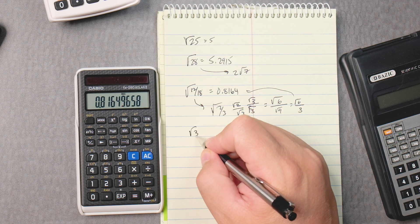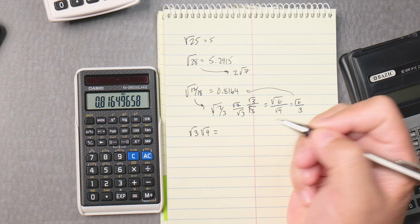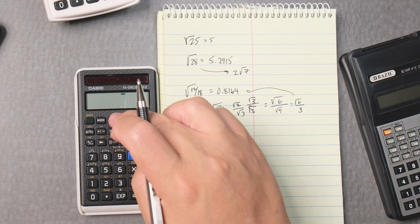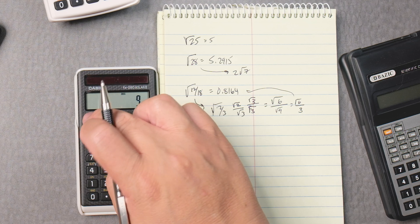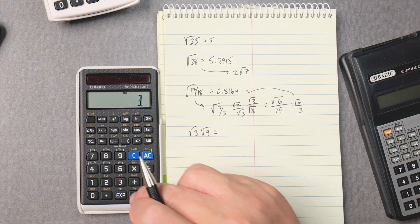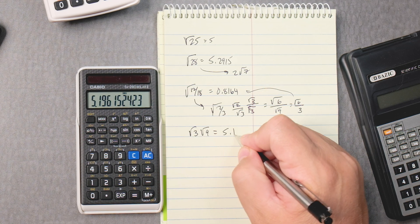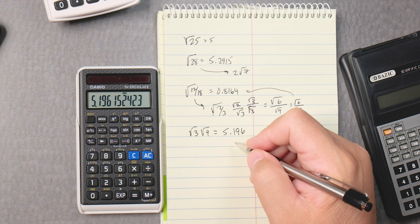Let's say I wanted to do the square root of 3 times the square root of 9, right? So you do 3, shift, x squared, times 9, shift, square root, equals 5.196, right?